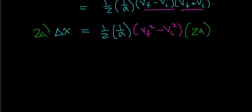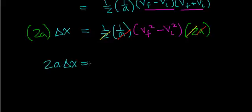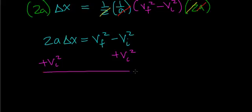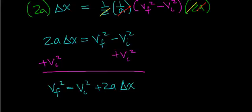What you do to one side, you do to the other side. The two cancels out with the two, and the acceleration cancels out with that acceleration. You're left with two times the acceleration times the change in distance, equals v final squared minus v initial squared. The last step is to add v initial squared to both sides, and what you get is v final squared equals v initial squared plus two times the acceleration times the change in distance. And this is our last kinematic equation.